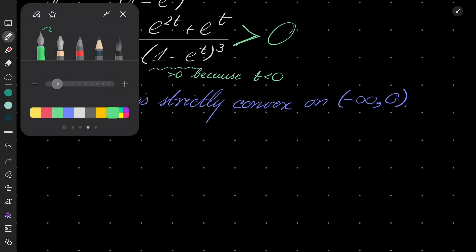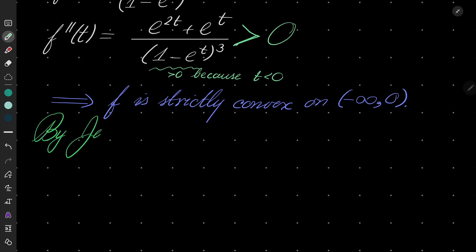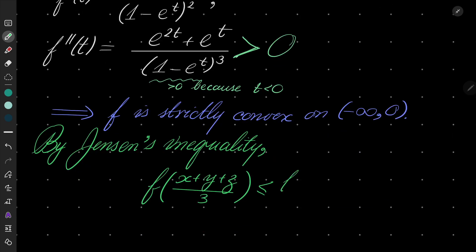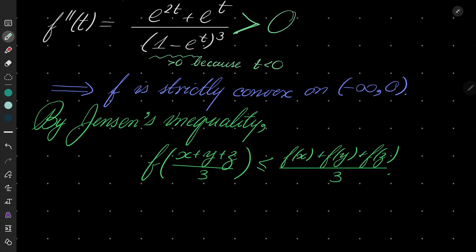And now it's time to use Jensen's inequality. By Jensen's inequality, f of x plus y plus z over 3 is less than f of x plus f of y plus f of z over 3. And moreover, Jensen's inequality states also when equality is attained.